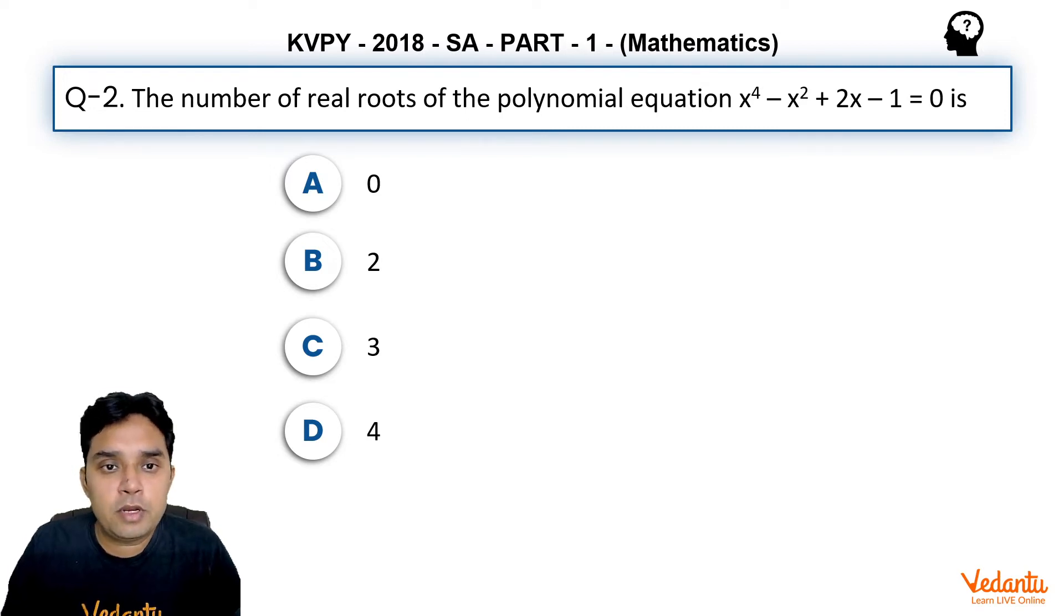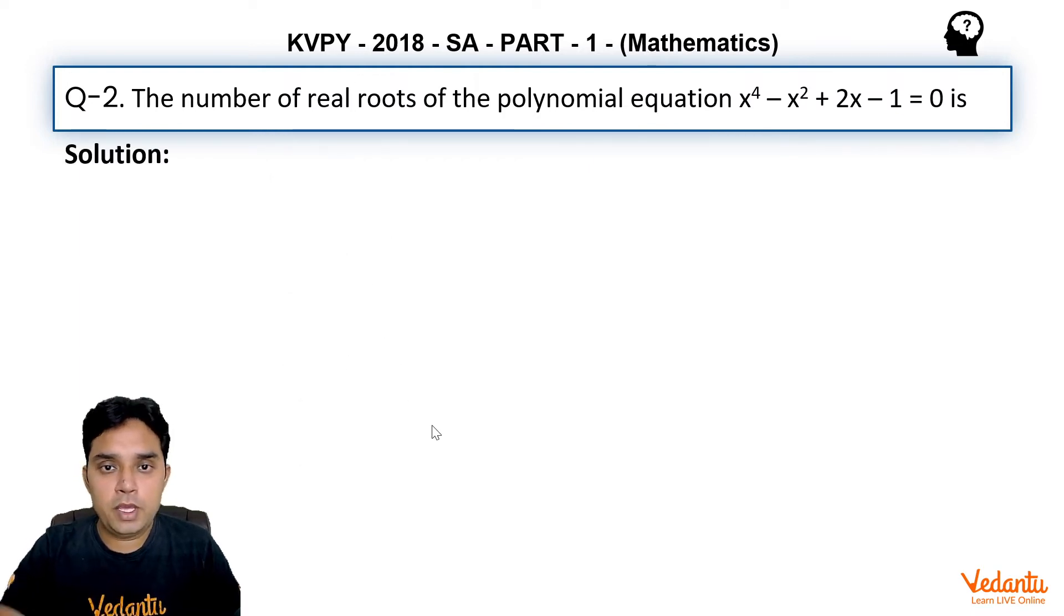The number of real roots of the polynomial equation x^4 - x^2 + 2x - 1 = 0 is, and options are: A) 0, B) 2, C) 3, and D) 4. Now to solve this question, we can observe that if I write x^4 separately and all other quantities inside one bracket...